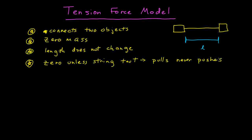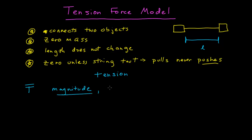You cannot, in our model, push a mass with a string. So this force that the string exerts on a mass we call tension, and we give it a capital T — it's a vector so we have a vector sign. The magnitude of the tension for the most part is possibly unknown. We represent it as a capital T without the vector sign, and it either has to be given in the problem or we have to solve for it.